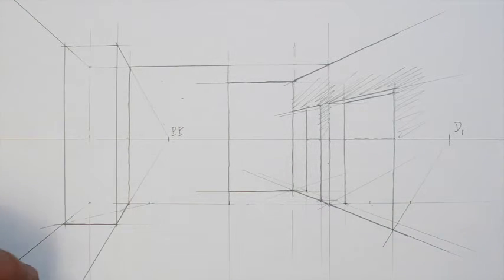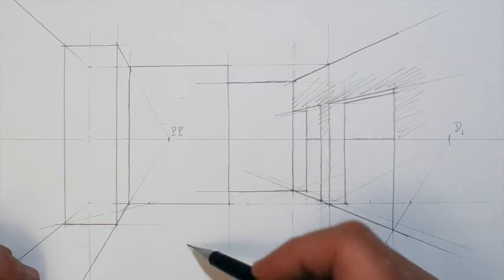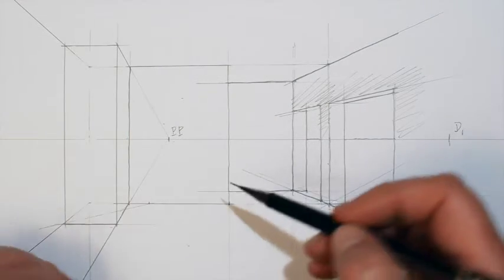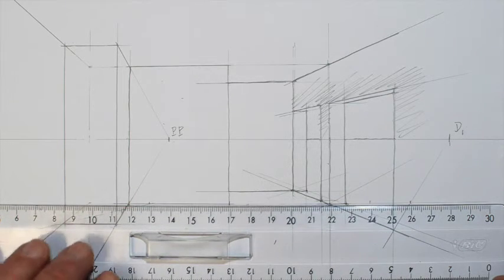Here I want to make a table which would be 1.5 meters from the wall backwards. So I have to remember that this is the ground line where I must take the measure.